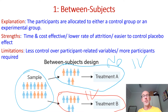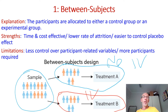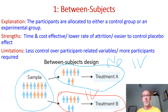The limitation is that we will have no control or very limited control over participant-related variables. For instance, if we were doing a study on memory, our group in treatment A might have a much lower short-term memory capacity than our participants in treatment B. That could have a confounding impact on our dependent variable, and potentially we'll need double the amount of participants compared to a within-subjects design.